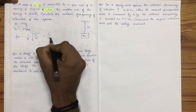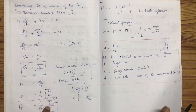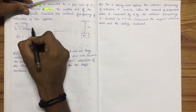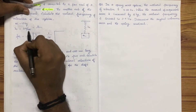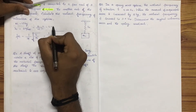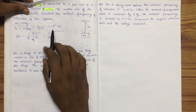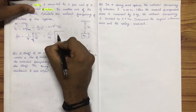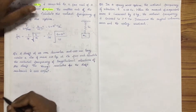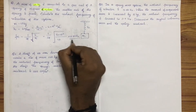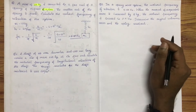fn = 1 by 2π into root of k by m. Note that k by m is also equal to g by δ. k = 6 N/mm, converting to SI units: 6 × 10³ N/m. m = 10 kg. Substitute to get the answer.